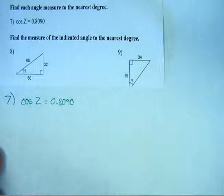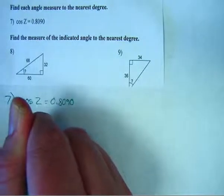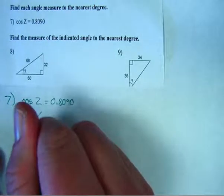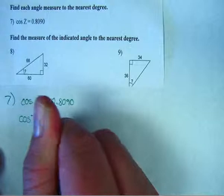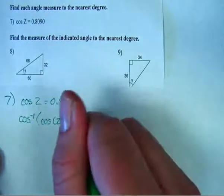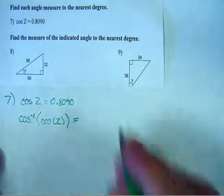And the way we do that is to use a function called the inverse cosine. And it's written like this. So that means the inverse cosine. And then I'm going to do that to the cosine of z, which looks a little strange, but bear with me.